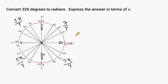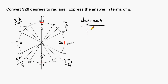Now if you haven't committed to memory the conversion of these angles from degrees to radians, what you can do is set up a proportion. That proportion is the number of degrees you want to convert over 180 degrees, set equal to the number of radians over pi.